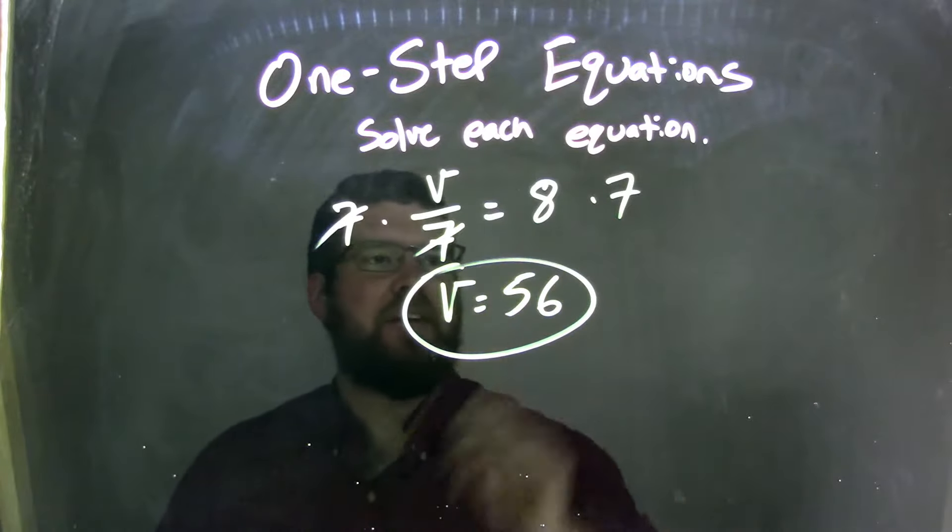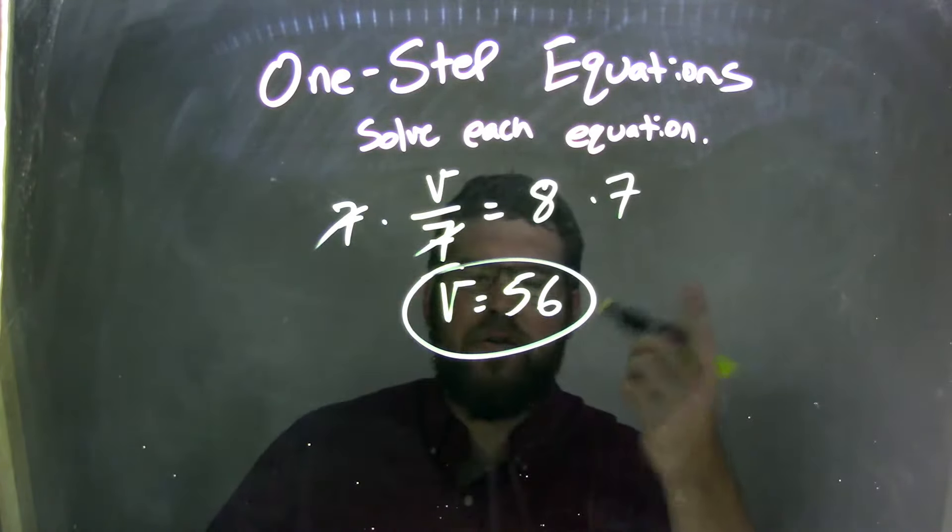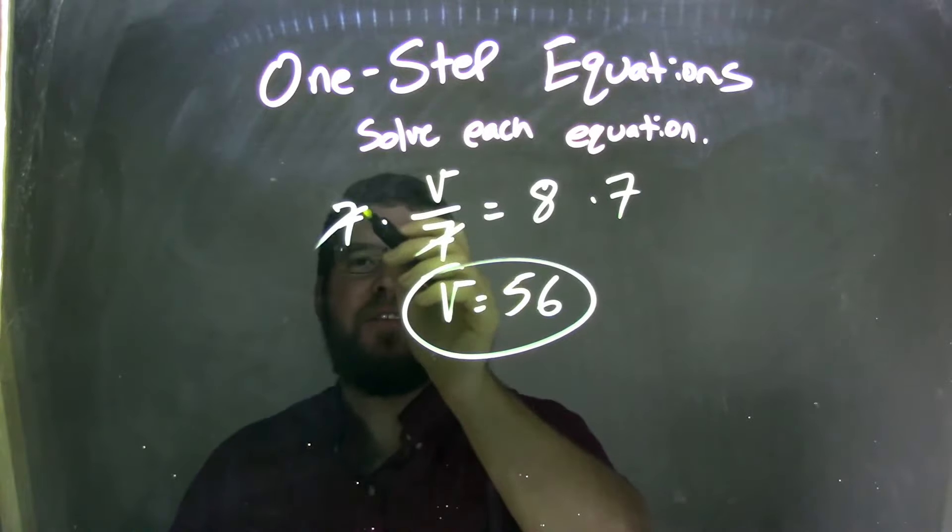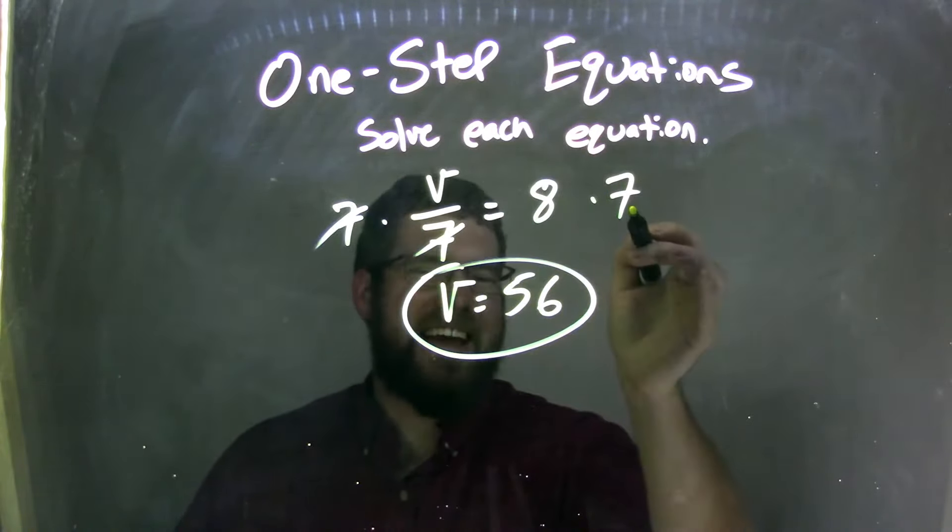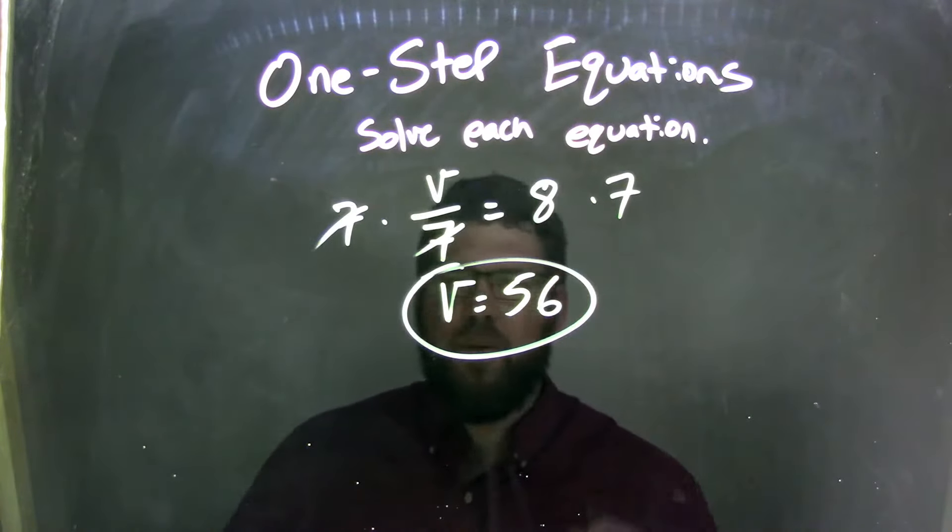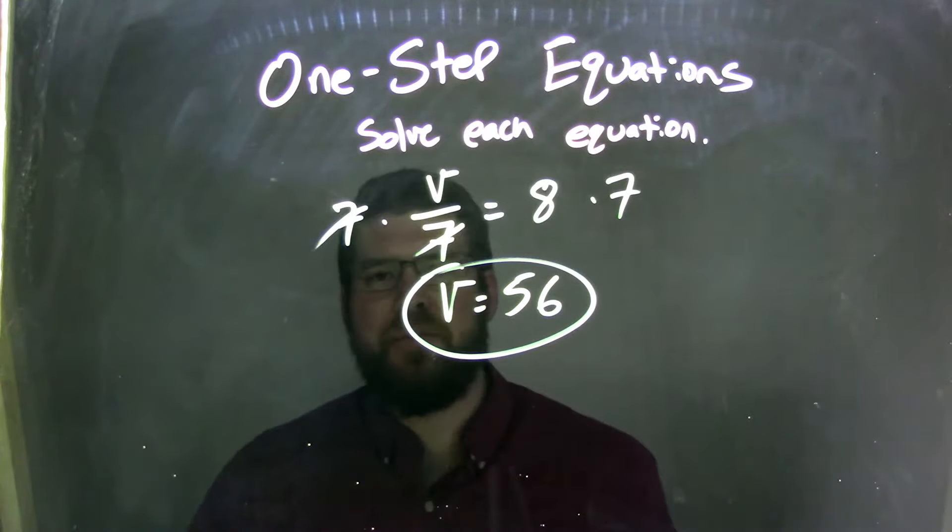So I multiplied 7 to both sides. What you do to one side, you have to do to the other. The 7s cancel here, so I'm left with just V, and now I have V equals—what's 8 times 7? Well, 8 times 7 is 56. And so my final answer here is V equals 56.